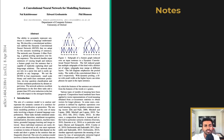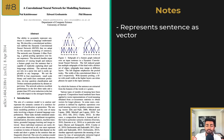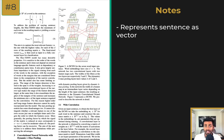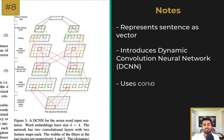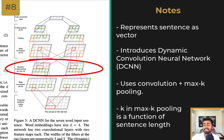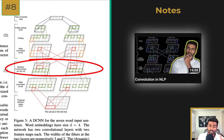Next is A Convolutional Neural Network for Modeling Sentences. We've spoken about representing words as vectors, but we also want to represent sentences as fixed-length vectors such that their meaning is preserved. This DCNN does so using convolution and max k-pooling operations. The value of k depends on the size of the input, making this a dynamic network. This way, longer sequences of words can be represented pretty well.